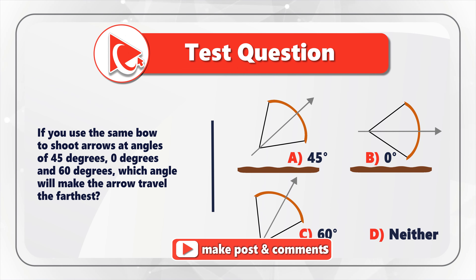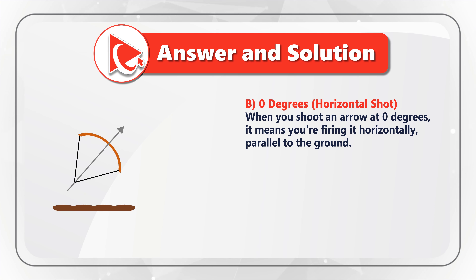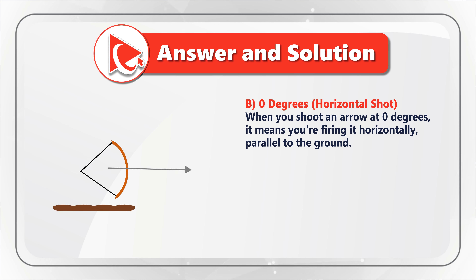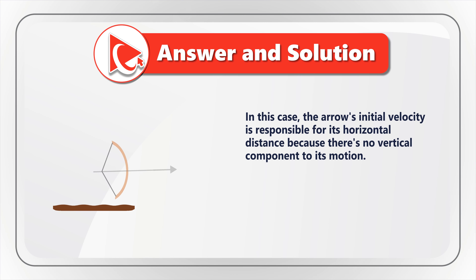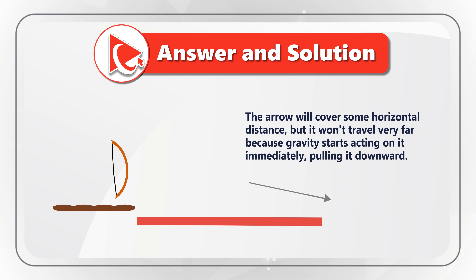Let's start by looking at the scenario where we shoot the arrow at 0 degrees, which ultimately means a horizontal shot. When you shoot it at 0 degrees, it means you are firing it horizontally, parallel to the ground. In this case, the arrow's initial velocity is responsible for its horizontal distance, because there is no vertical component in its motion. The arrow will cover some horizontal distance, but it won't travel very far because gravity starts acting on it immediately, pulling it downward.